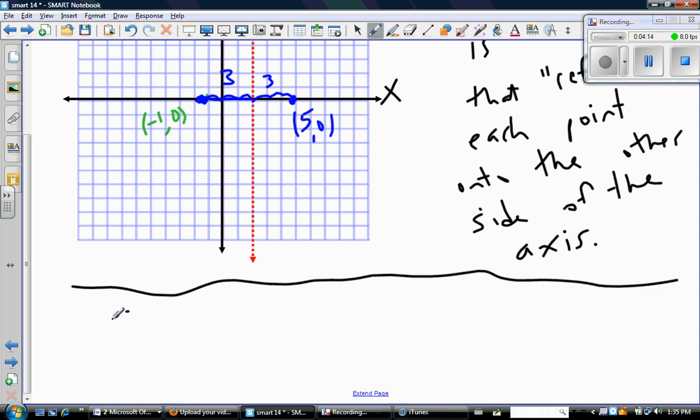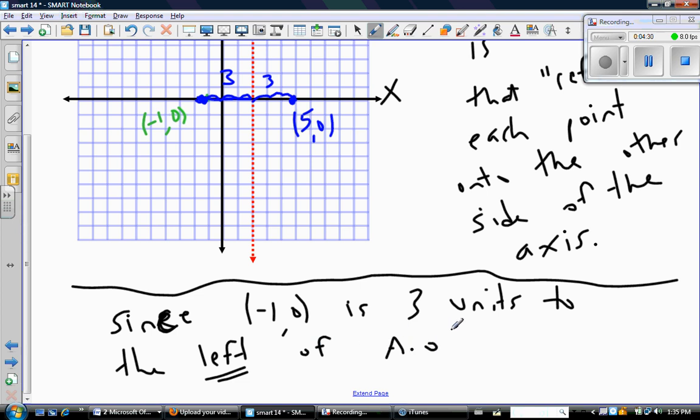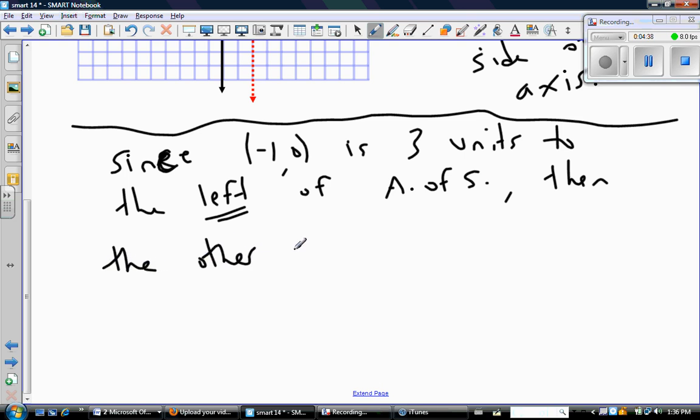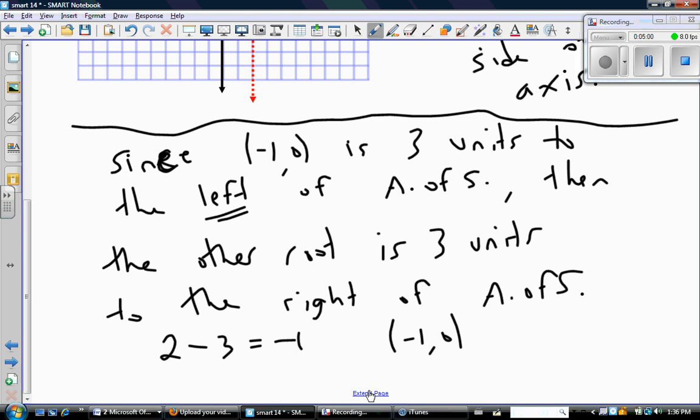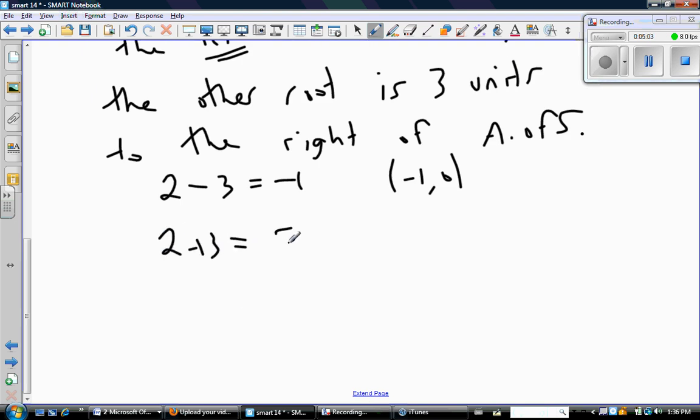Maybe I should say that since (-1, 0) is 3 units to the left of the axis of symmetry, then the other root is 3 units to the right of the axis of symmetry. So therefore, 2 minus 3 equals -1, and that gave me (-1, 0). So 2 plus 3 equals 5, and that gives me (5, 0).